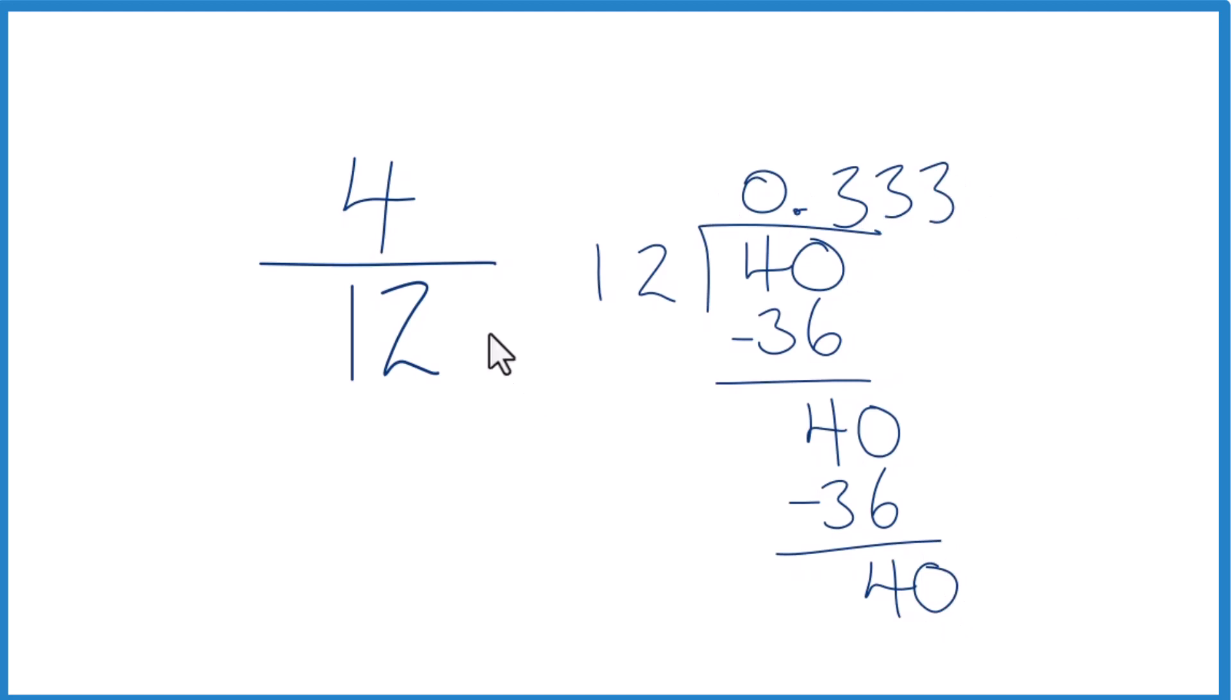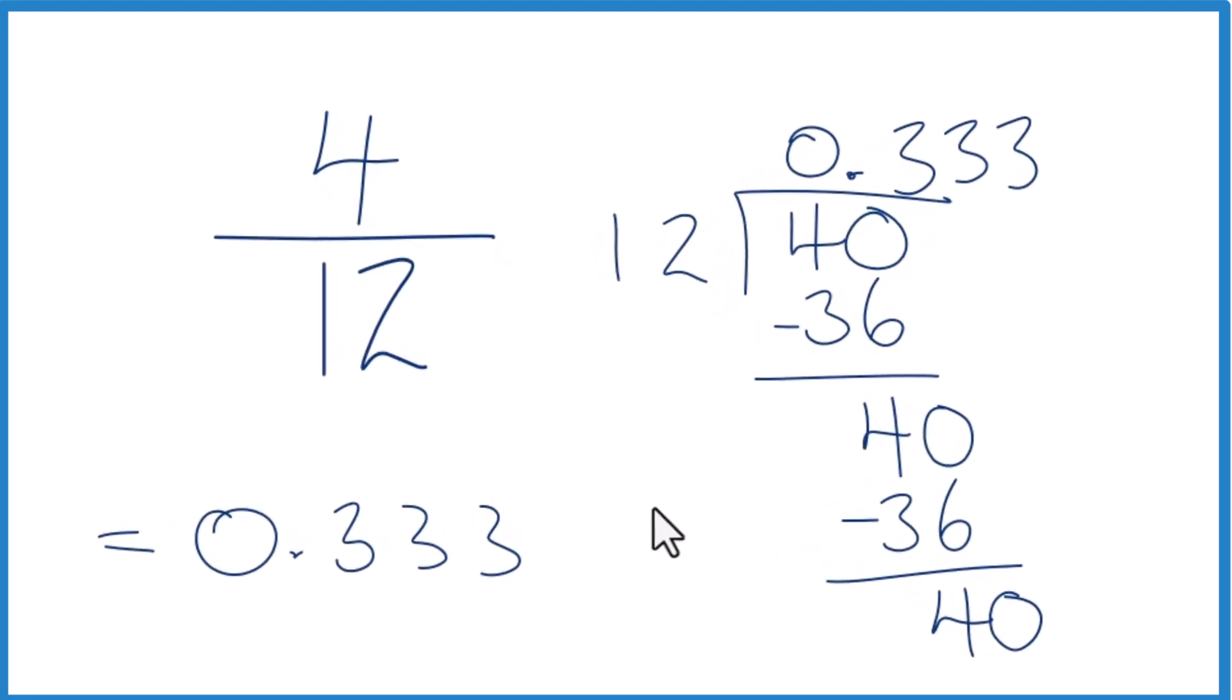So in answer to our question, 4 twelfths, the fraction, when we write that as a decimal, we get 0.333, those threes keep repeating, so we'll just put a bar over it to show that.